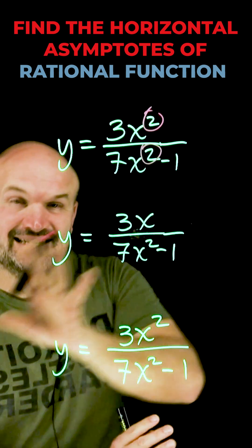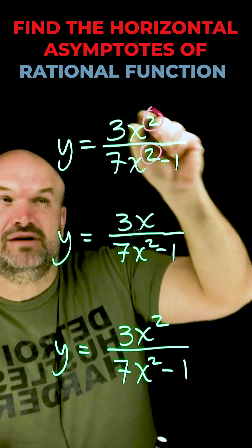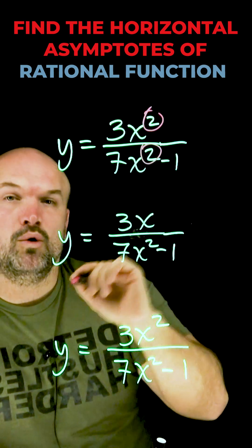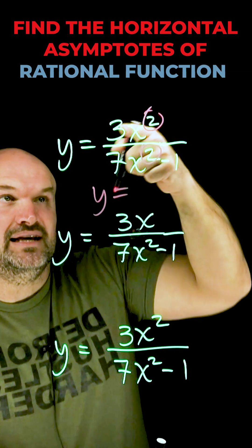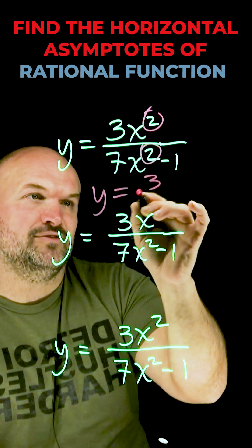So make sure everything is in descending order, right? You have your highest power first going down. So that means you're going to be looking at your leading term. And when the powers are exactly the same, our horizontal asymptote is simply going to be the leading coefficient over the leading coefficient, which in this case is going to be 3 over 7.